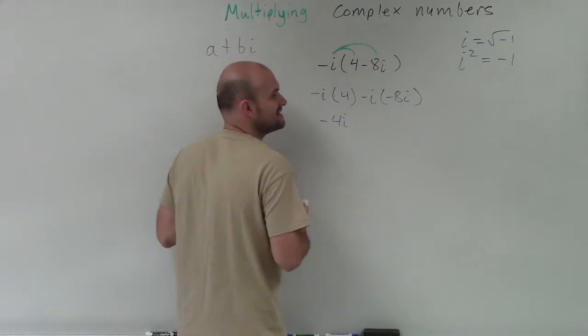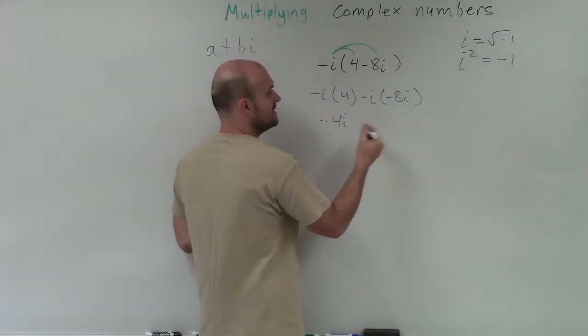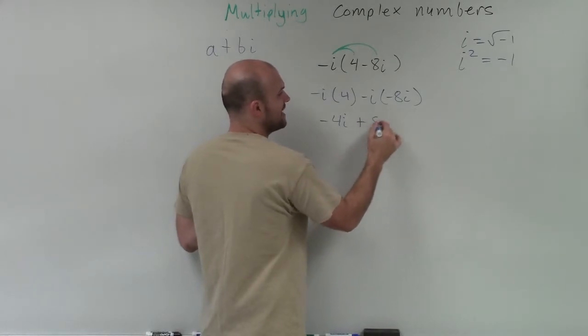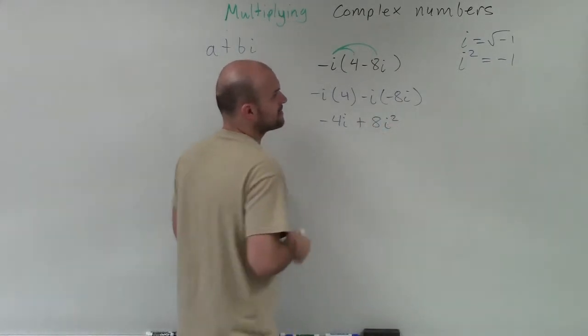And then, negative i times negative 8i is going to be positive 8i squared.